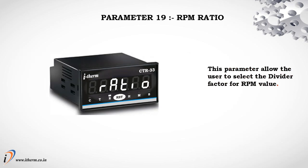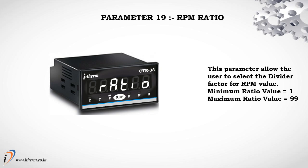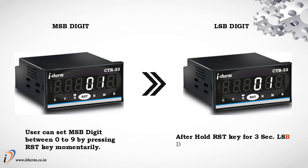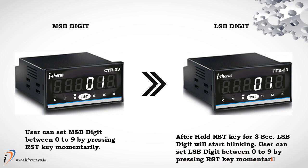Parameter 19: RPM ratio. This parameter allows the user to select the divider factor for the RPM value. The minimum ratio value is 1 and the maximum is 99. The user can set the MSP digit between 0 to 9 by pressing the reset key momentarily. After holding the reset key for 3 seconds, the LSP digit will start blinking and can be set between 0 to 9. This is the last parameter of the configuration list. Press and hold the reset key for 3 seconds to enter run mode.